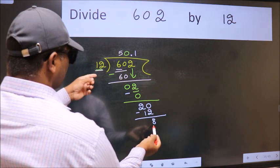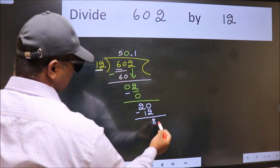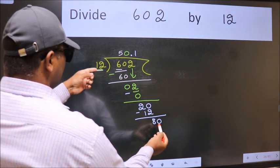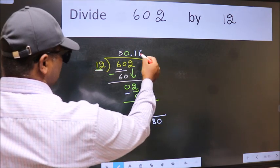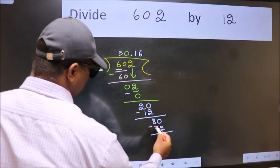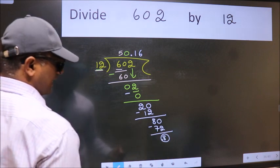8 smaller than 12. We already have the decimal. So directly take 0. So 80. A number close to 80 in 12 table is 12 6 72. Now we subtract. We got 8 again.